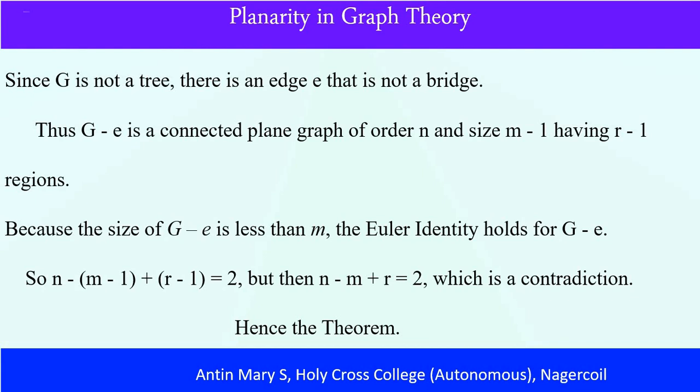Since G is not a tree, there is an edge e that is not a bridge. Thus G minus e is a connected plane graph of order n and size m minus 1, having r minus 1 regions. Because the size of G minus e is less than m, the Euler identity holds for G minus e. So n minus (m minus 1) plus (r minus 1) equals 2, but then n minus m plus r equals 2, which is a contradiction. Hence the theorem.